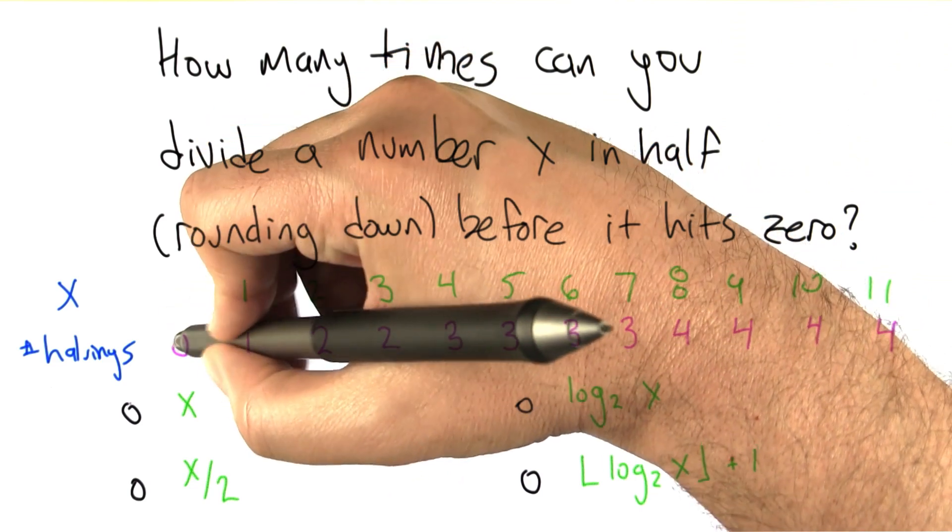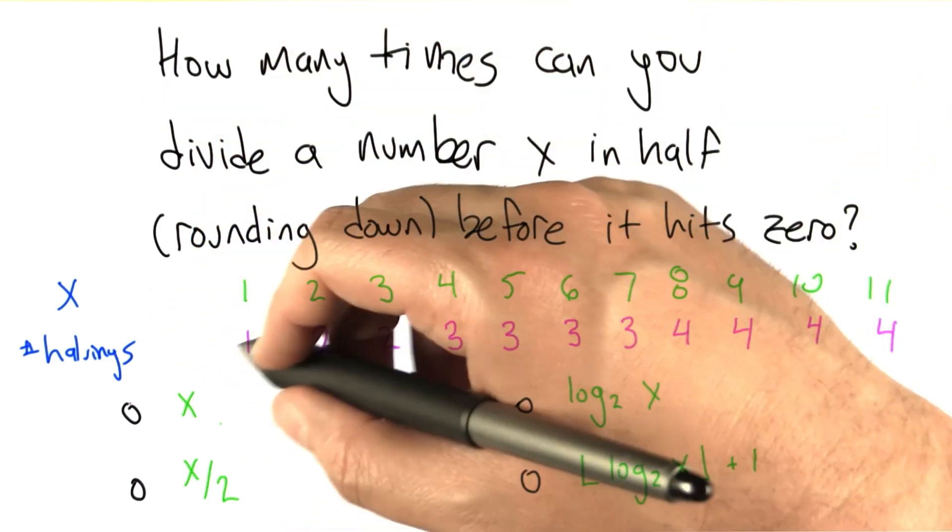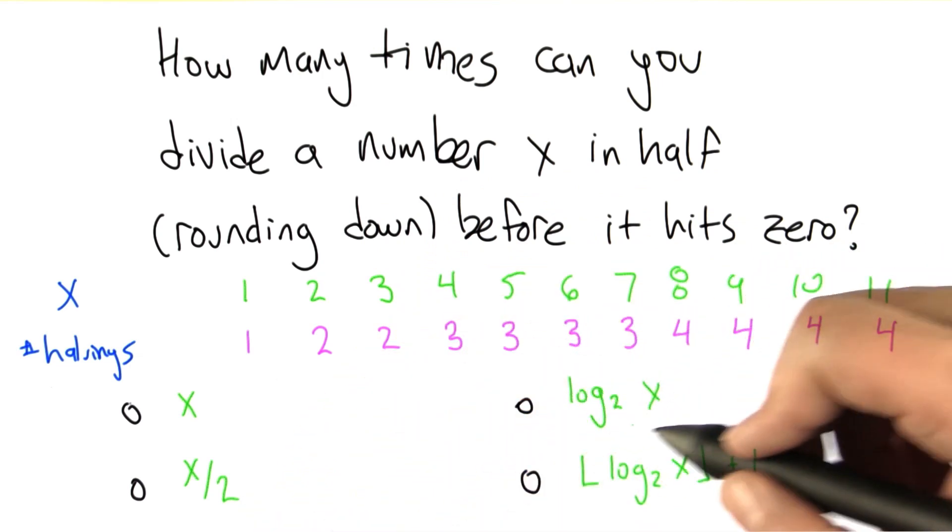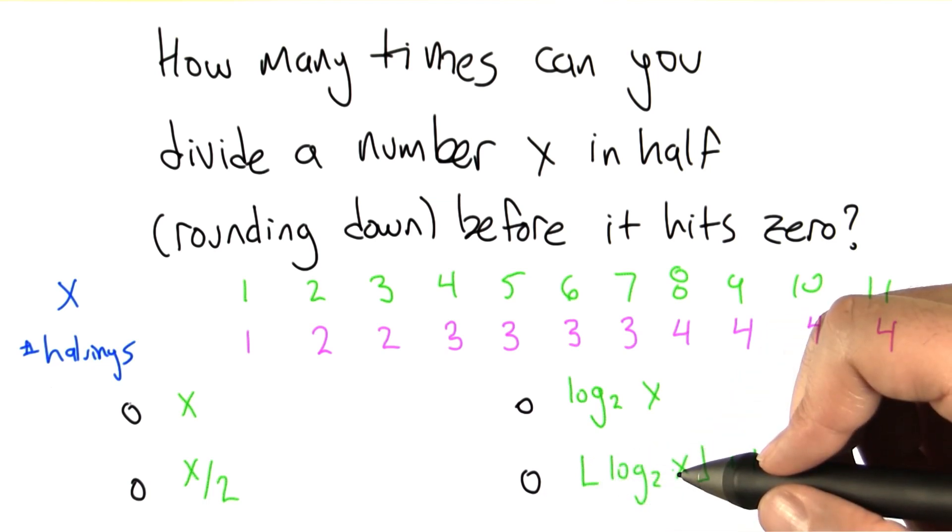Just to simplify things a bit, let's get rid of the 0 case because it's a bit messy. The functions are: x, which seems to work for a little while; x over 2; the log base 2 of x; and the log base 2 of x floor, meaning rounded down if it's not an integer, plus 1.